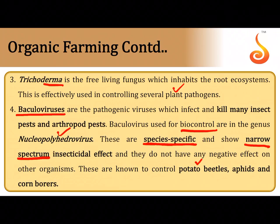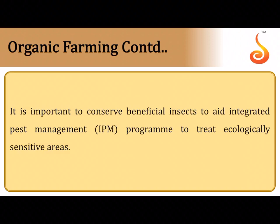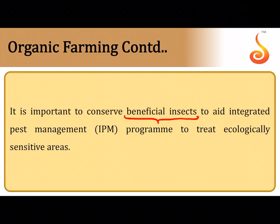Baculoviruses are known to destroy several insect pests like potato beetles, aphids, and corn borers. By using natural predators — microbes and insects like ladybird beetles, dragonflies, Nucleopolyhedroviruses, and Trichoderma in root ecosystems — we conserve beneficial insects and carry out what is referred to as integrated pest management.